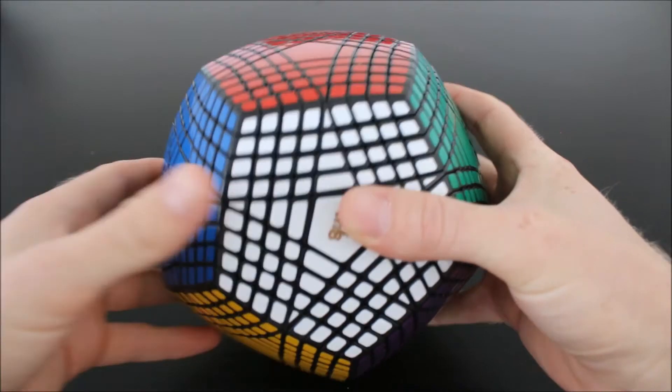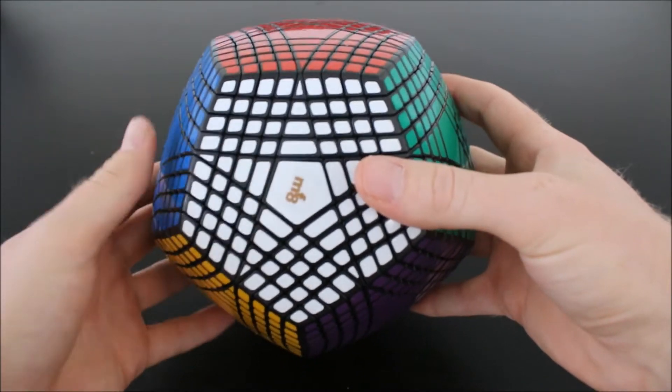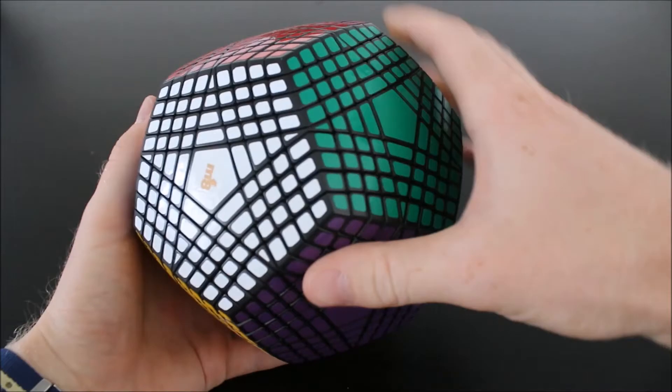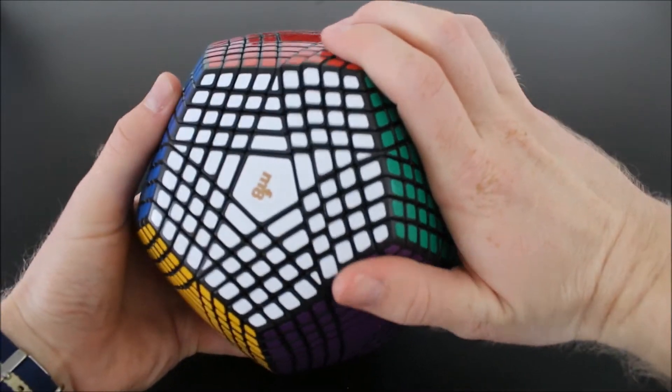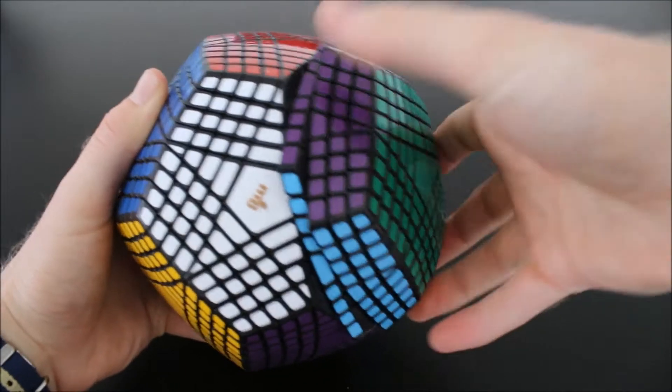And you would think with something like this that is close to a thousand pieces that the turning would be a little rough, but that is not the case at all. This thing just turns smooth. Every single layer is amazing.